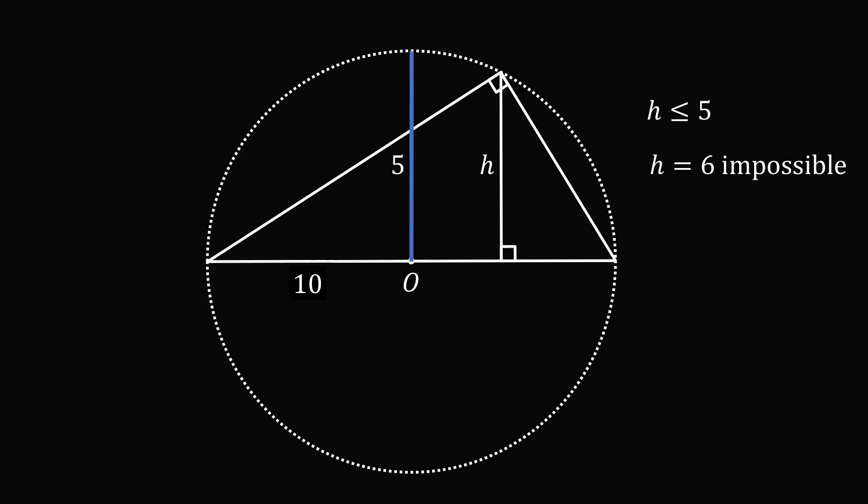You can't have an altitude to the hypotenuse of a right triangle that's larger than half the length of the hypotenuse. Therefore, a value that h is 6 is impossible. You must think about the problem before you calculate.